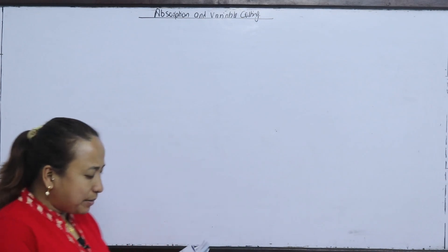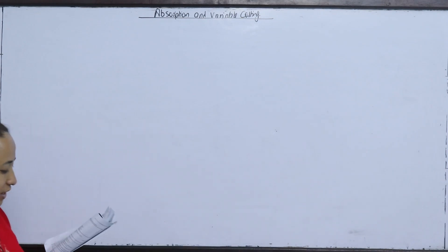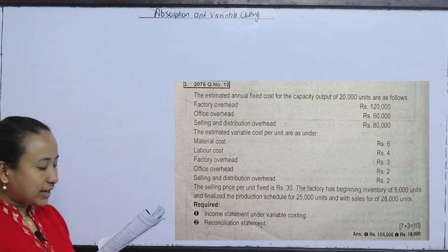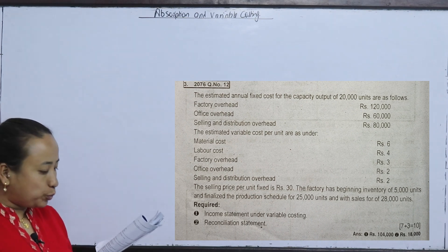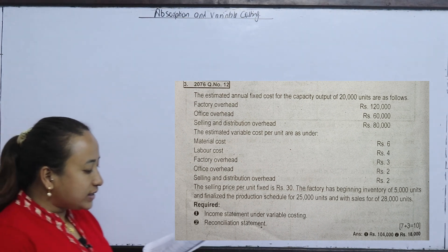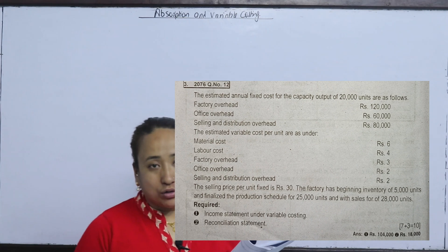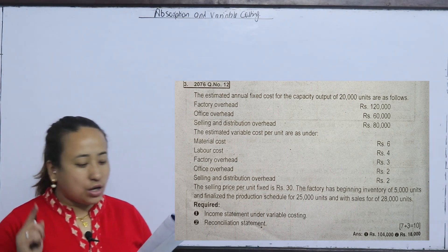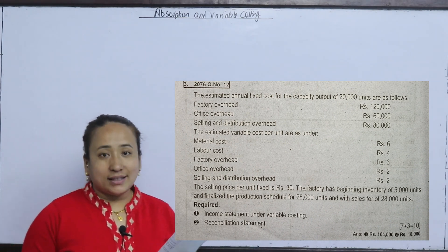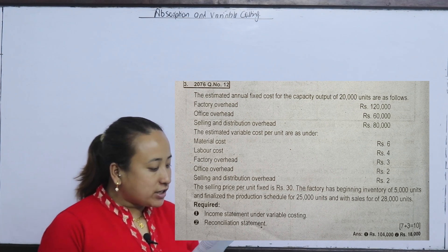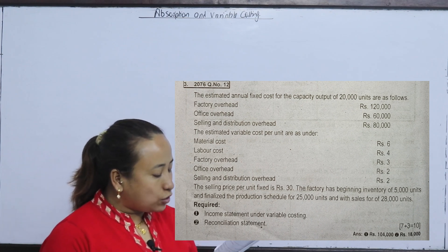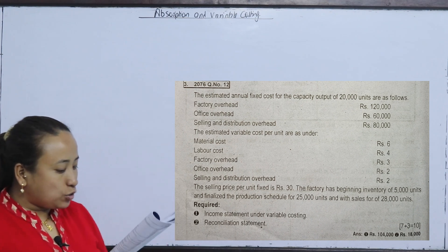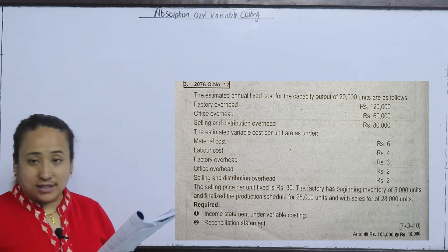We will work through a question. The estimated annual fixed costs for the capacity output of 20,000 units are as follows — normal capacity is 20,000 units. Fixed costs include: factory overhead, office overhead, selling and distribution overhead.